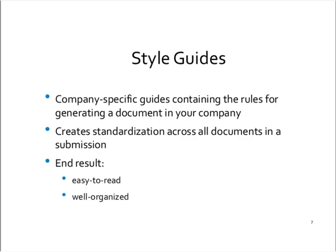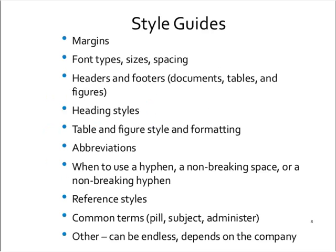Style guides and templates — let's talk about those. They're very important. Style guides are company-specific guides that contain basically all the rules for generating a document in your company. Sometimes different divisions have their own style guides, depending on the size of your company; sometimes they're company-wide. If you don't have a style guide, I recommend using the American Medical Association Manual of Style — that's the standard in the industry. A style guide will help create standardization across all your documents within your submission and within your company. The end result is a very easy-to-read and well-organized document. As reviewers look at your documents throughout the life cycle of your product, they're all going to look the same, and that's very helpful in the review process.